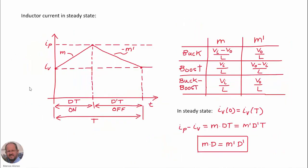First, let's start by analyzing the inductor current in steady state for the three common topologies: the buck, boost, and buck-boost converters. For the three topologies, during the on-time the current through the inductor is increasing when the transistor is on. We designate the slope of this current as m. During the off-time, the current is decreasing with a slope designated as minus m-prime, where m-prime is a positive number. On this table we have the different values of the slopes m and m-prime for the three converters, depending on the input voltage, output voltage, and the inductor.